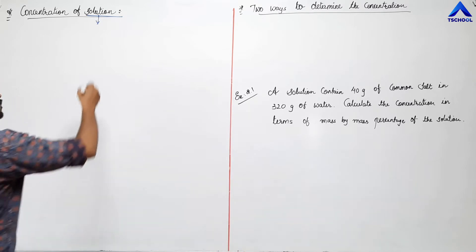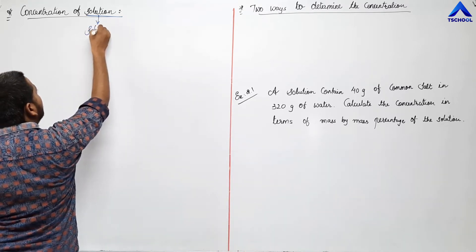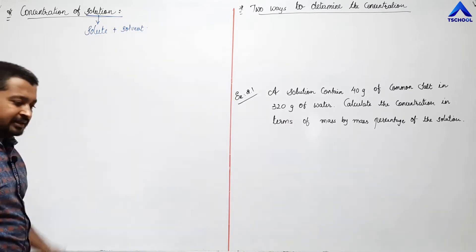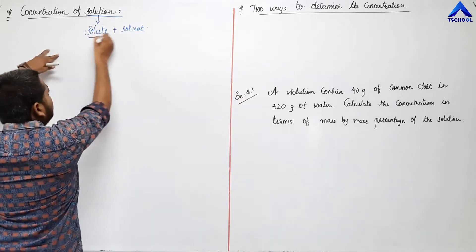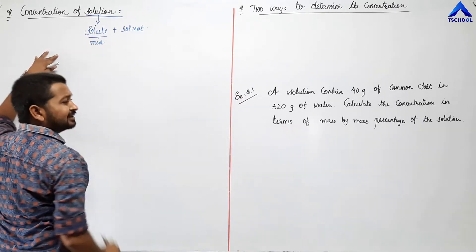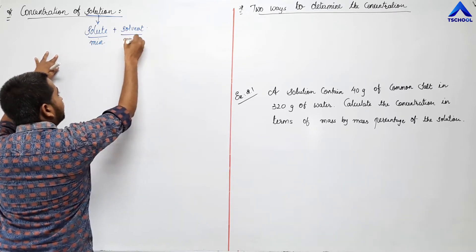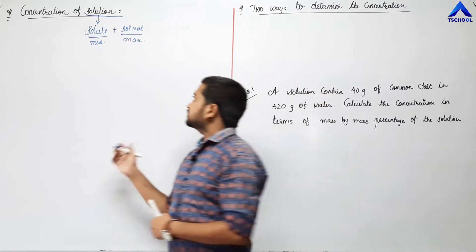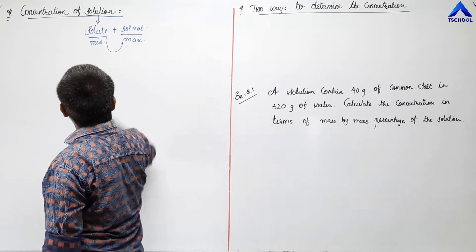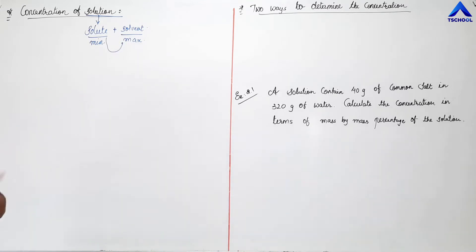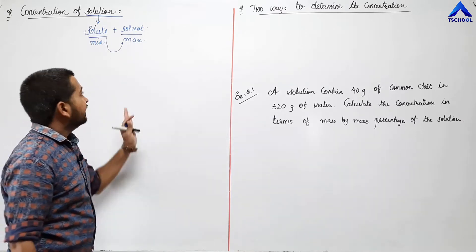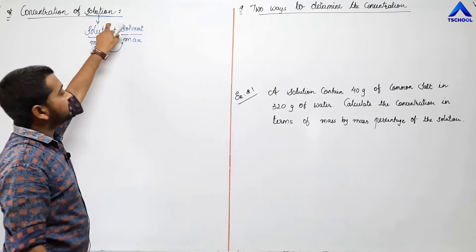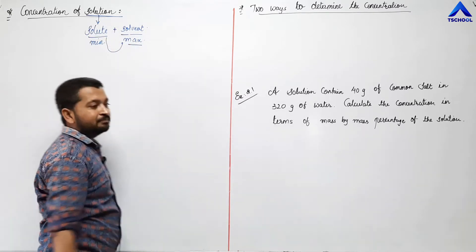A solution is made up of solute and solvent. The solute is always in minimum quantity and the solvent is always in maximum quantity. The solute is dissolved in the solvent. The solvent determines the state of the solution because it is present in the maximum quantity.